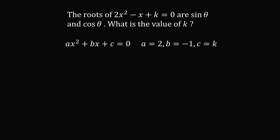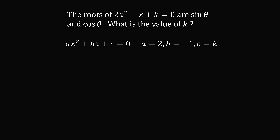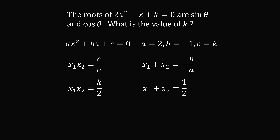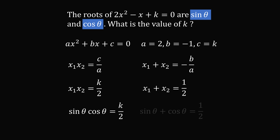Now I want to go over another way to solve this problem using the product and sum of roots formulas. In a quadratic equation ax squared plus bx plus c equals zero, the product of the two roots is c over a, and the sum of the two roots is negative b over a. With a equal to 2, b equal to negative 1, and c equal to k, the product of the roots equals k over 2 and the sum equals 1 over 2.